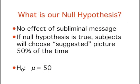The null hypothesis is that the subliminal message has no effect on which picture is chosen. More specifically, the null hypothesis is that the mean number of times the suggested picture is chosen in the population is 50. That is, if there were no effect of the subliminal message, then subjects would choose the picture with the message 50% of the time. Since we are testing 100 pairs of pictures, 50% of the time is equal to 50 of the pairs.